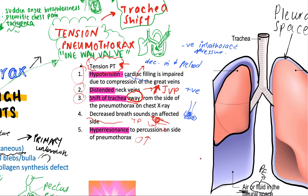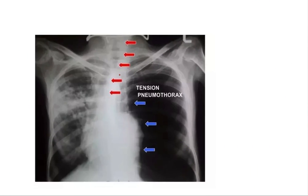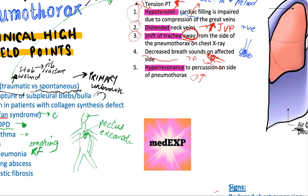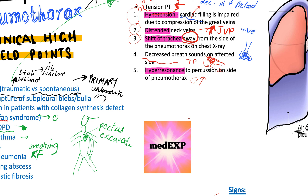Looking at the X-ray, you can see a blackened lung due to a large amount of air, and here you can see the trachea — which usually lies straight and medial — being deviated away from the side of the tension pneumothorax. This is a classic tracheal shift contralaterally. Hope that was helpful; please subscribe for more videos and give this video a like if you enjoyed.